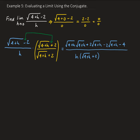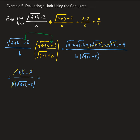Using the conjugate cancels out the middle terms. This leaves us with square root of 4 plus h times square root of 4 plus h, which is just 4 plus h, minus 4 — all divided by h times square root of 4 plus h plus 2. The 4 minus 4 gives us 0, and then we can cancel out the h. That leaves us with 1 divided by square root of 4 plus h plus 2.